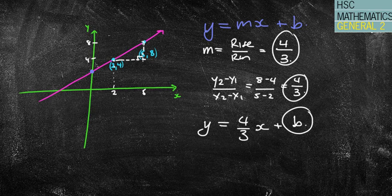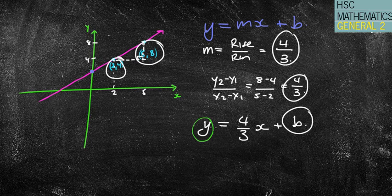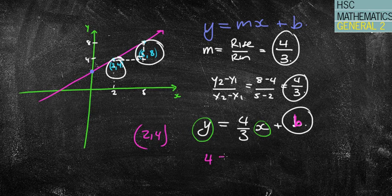So how do I find the b? Well, what we can do is we can take one of the two coordinates that we know, for example that one there or that one there, and we can sub them into this formula for the y and the x. That hopefully will allow me to then have one unknown letter, which in this case is the unknown letter of b. So if I take, let's say we take the 2,4. Now in this case, the 4 is the y value. I'm going to put that in there. The 2 is the x value. So I've got 4 over 3 times 2, and I've got plus b.